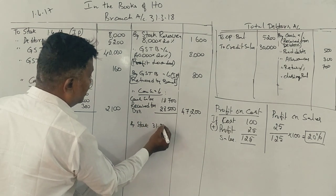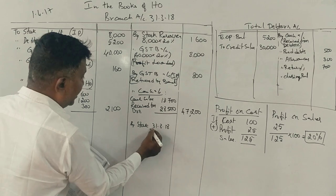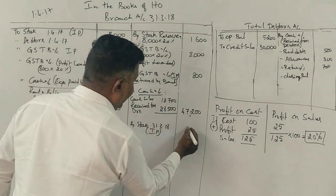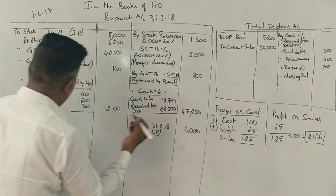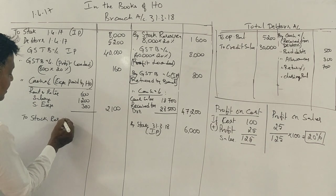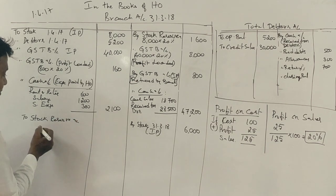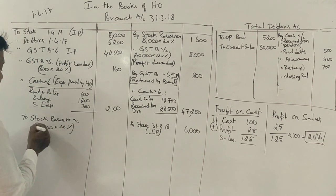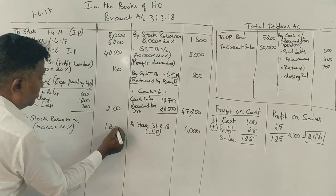Closing stock at branch on 31st March 2018 at invoice price is 6,000. The stock reserve on this is 20%, which is 1,200.